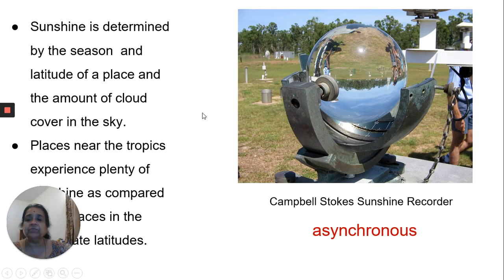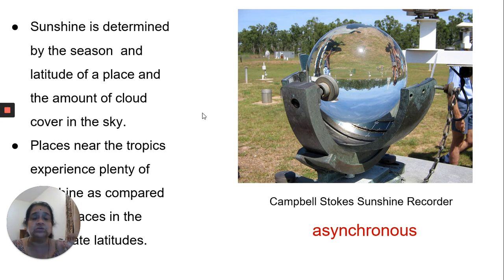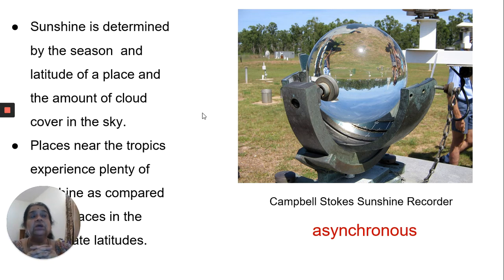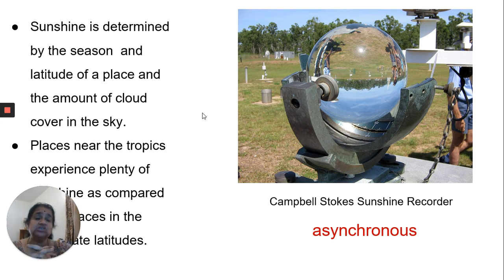Sunshine is determined by the season and the latitude of a place. In the tropics, the rays of the sun are very vertical — they fall on a small area so the heat is more. At the poles, the rays are slanting and spread over a large area, so the heat absorbed is very less.